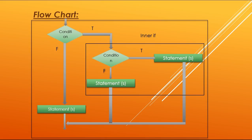In the flowchart of nested if, the condition of the outer if is evaluated first. If it is true, the control enters into the inner if block. If the condition is false, the inner if is skipped and control moves directly towards the else part of the outer if. If the outer if is true, control enters into the inner if statement, which is evaluated like a simple if statement.